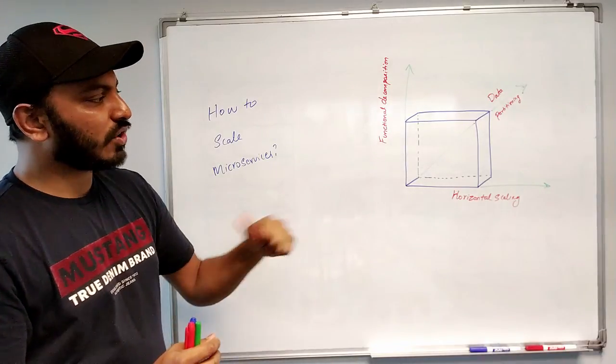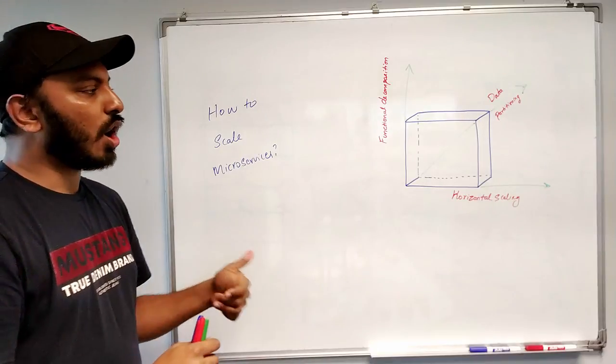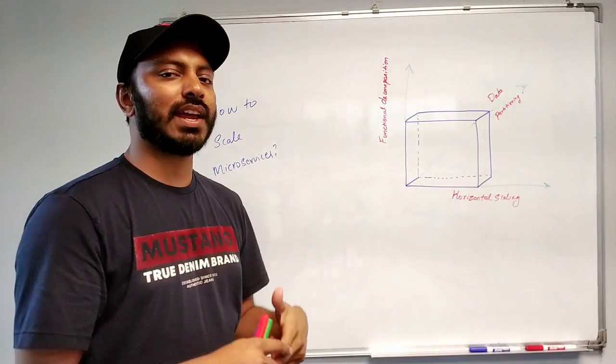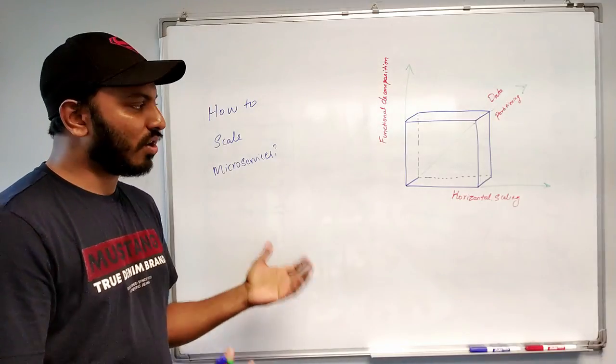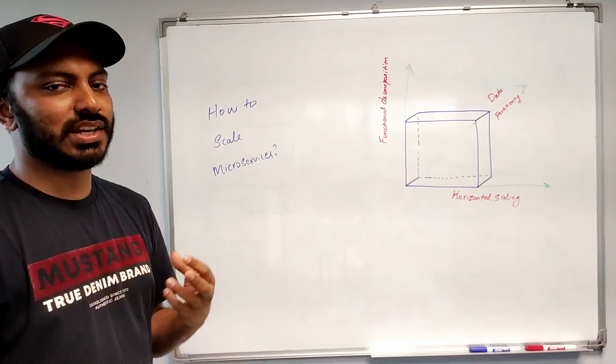So there is a concept called a scale cube. What it basically says is if the cube is your application, then you can basically grow this cube in three different directions: x, y, z in three dimensions.